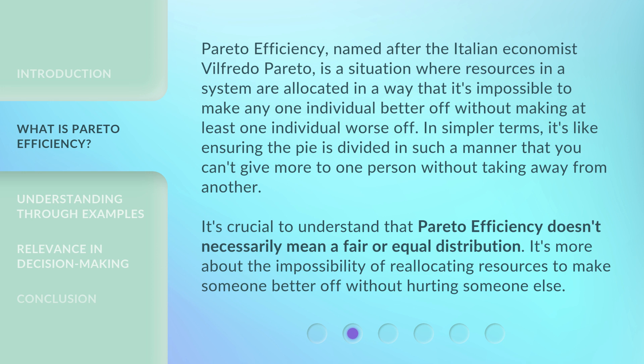Pareto Efficiency, named after the Italian economist Vilfredo Pareto, is a situation where resources in a system are allocated in a way that it's impossible to make any one individual better off without making at least one individual worse off. In simpler terms, it's like ensuring the pie is divided in such a manner that you can't give more to one person without taking away from another. It's crucial to understand that Pareto Efficiency doesn't necessarily mean a fair or equal distribution. It's more about the impossibility of reallocating resources to make someone better off without hurting someone else.